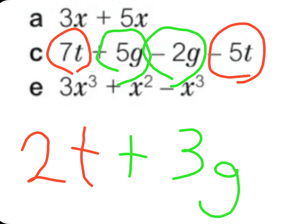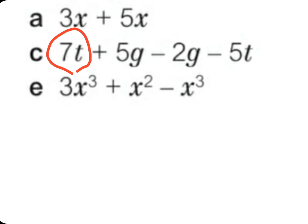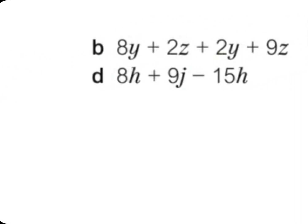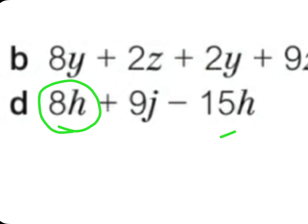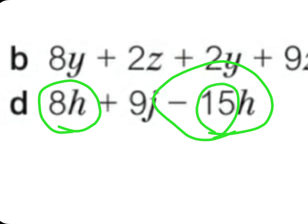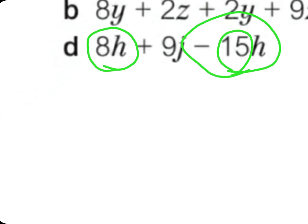Now let's look at question D. In this question we have 8h, 9j, 4g, and 15h. Which ones are the same? We have 8h and 15h. The difference here is that the negative sign is on the bigger number — 15h. You learned before that when the negative sign is on the bigger number, we start with a negative sign. Let's set 9j aside for now since it has no like term.